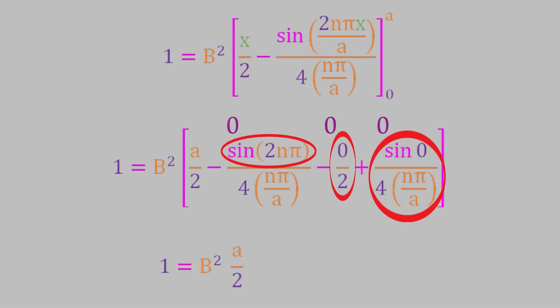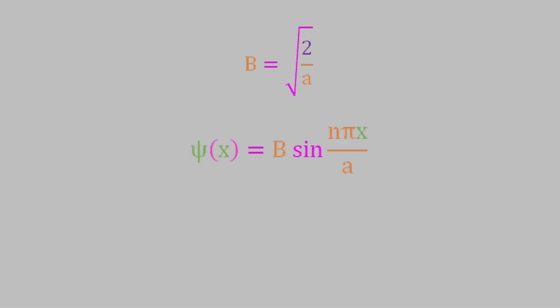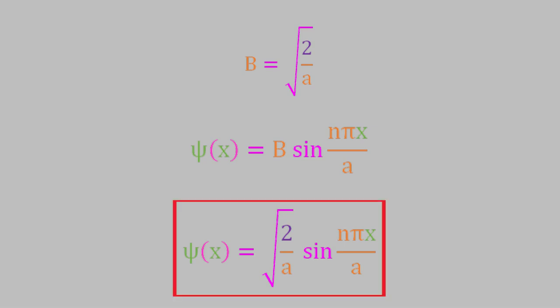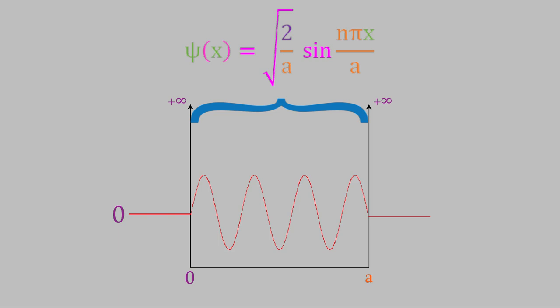That means our equation is now just 1 equals B² times a/2. If we solve for B, we find that B equals the square root of 2/a. We can plug that in for B in our wave function, giving us psi equals sqrt(2/a) times sine(n·pi·x/a). So now we finally have the complete wave function — this is the first actual usable wave function we've had for a chemical system. An important thing to remember is that this wave function only applies to a single electron in a box bordered by an infinitely deep potential barrier. But now that we've seen how to determine a wave function, we'll be able to find wave functions for more realistic systems soon. That's enough new material for today — we'll look at more systems and more wave functions in the next video, and our examples will become more and more realistic as we go on. I hope you'll join me for that. Until next time, have a good week!